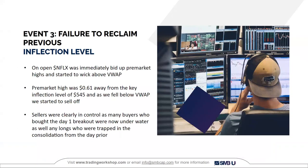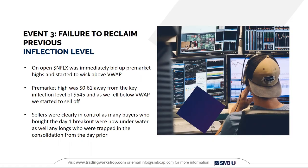Day three — this is when I put on the trade. On the open, Netflix was immediately bid up to its pre-market highs. That pre-market high was 61 cents away from the key inflection level of 545. After that, we fell below VWAP and started to sell off — sellers were clearly in control. Many buyers who bought the day-one breakout were now underwater, and any longs trapped in the prior day's consolidation were also underwater.